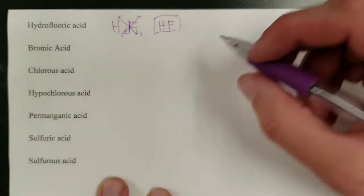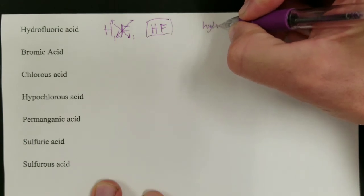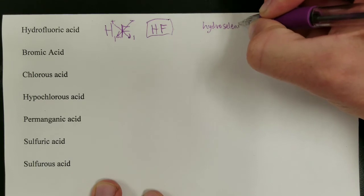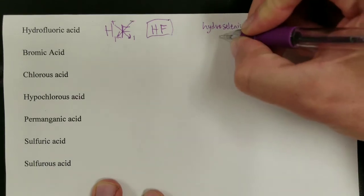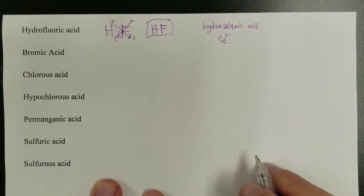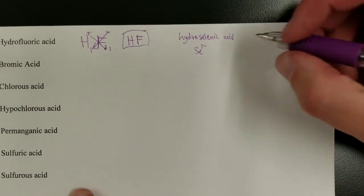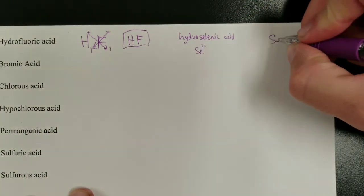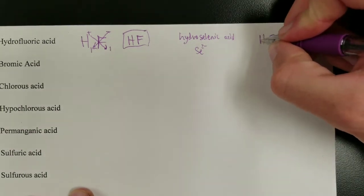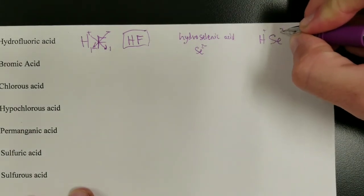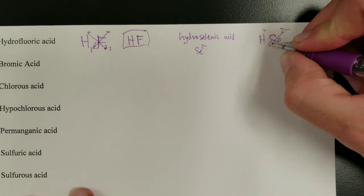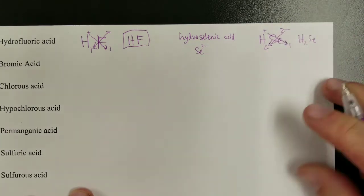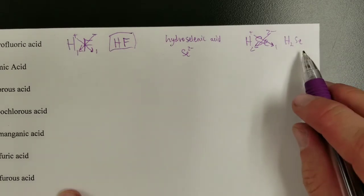You can use this approach for anything. Take hydroselenic acid: 'hydro' means no oxygen, 'selenic' tells us selenium is involved, and 'acid' means it starts with H. Selenium is a 2-minus ion, so you need two hydrogens and one selenium, giving the formula H₂Se.